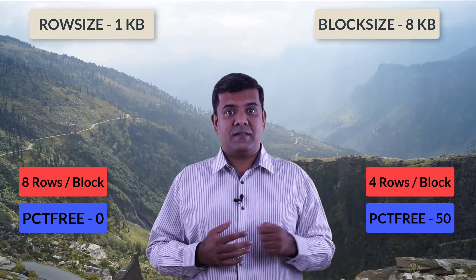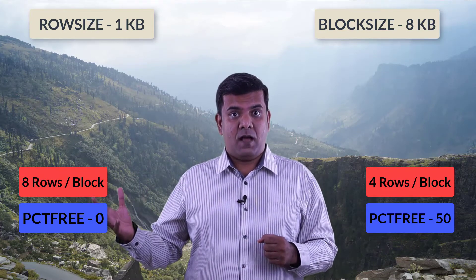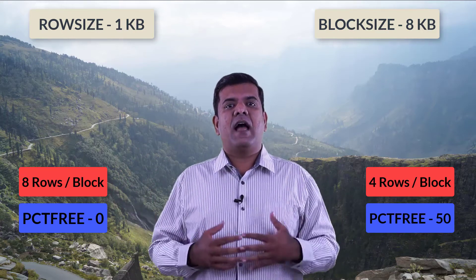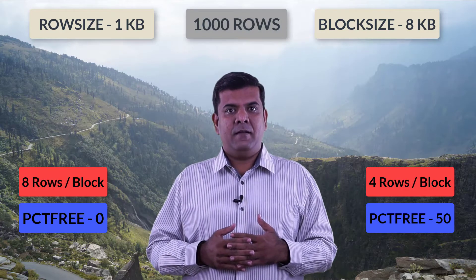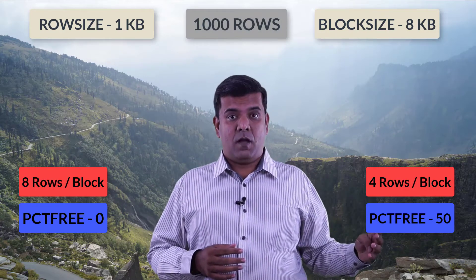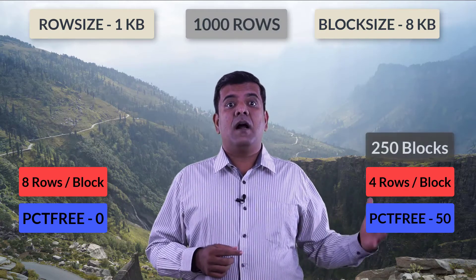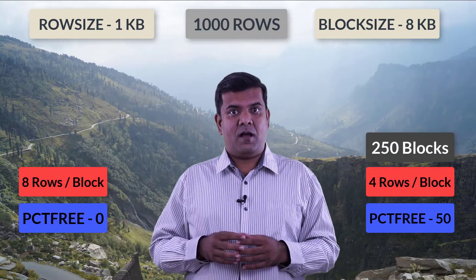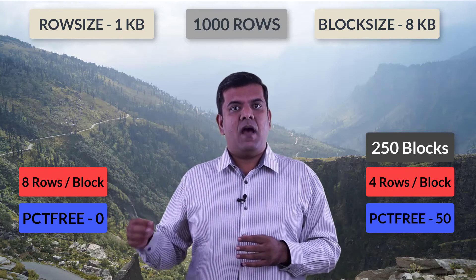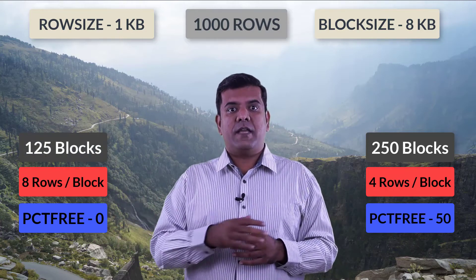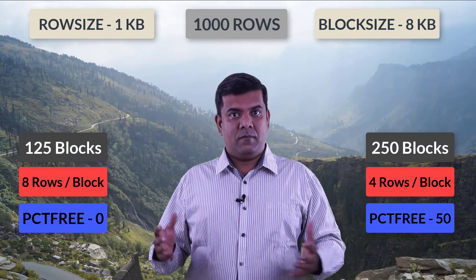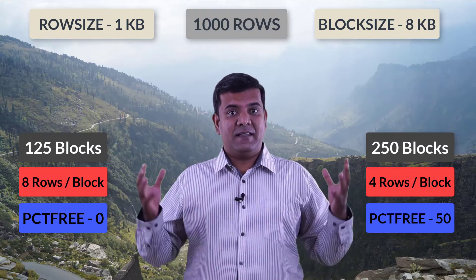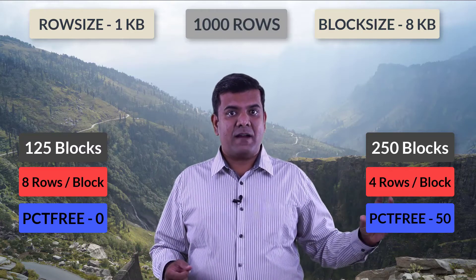Given that we have four rows per block with 50% PCTFREE and eight rows per block with 0% PCTFREE, if I have a thousand rows in this table, then at four rows per block I will need 250 blocks to store those thousand rows. At eight rows per block it is sufficient to keep 125 blocks to hold all this data.